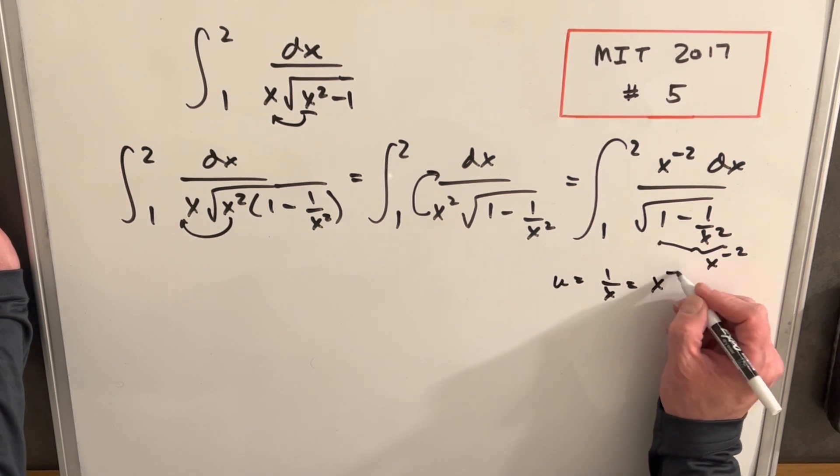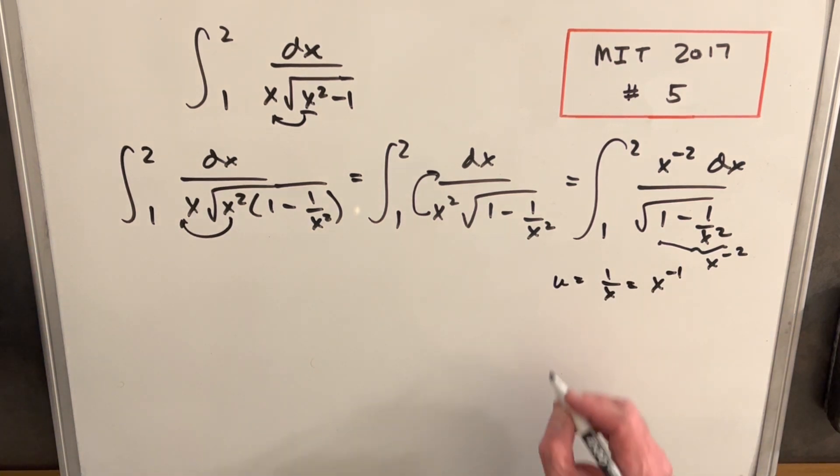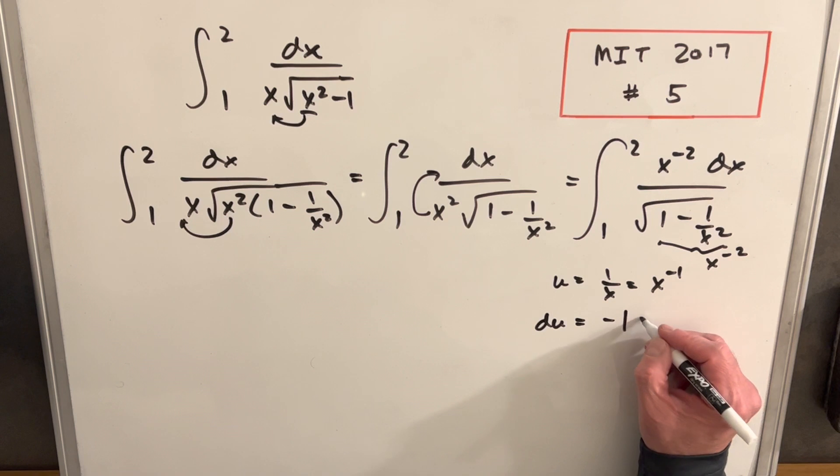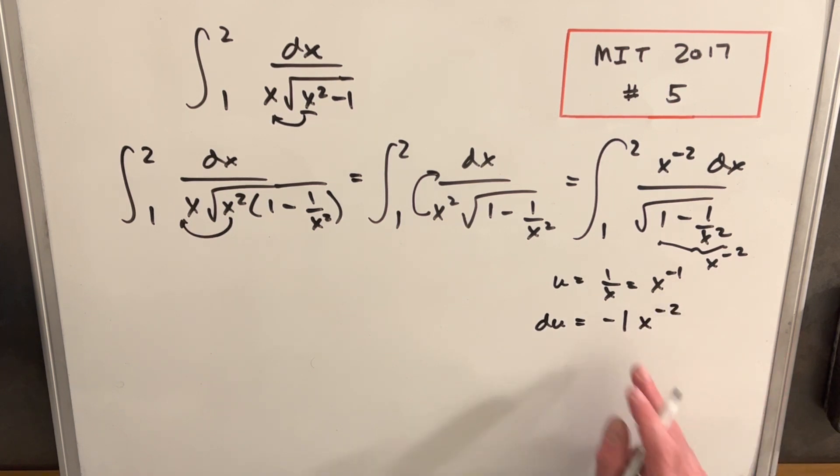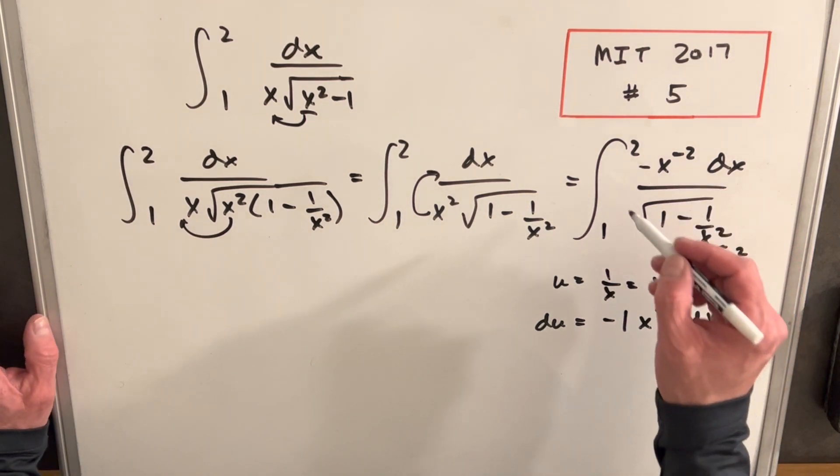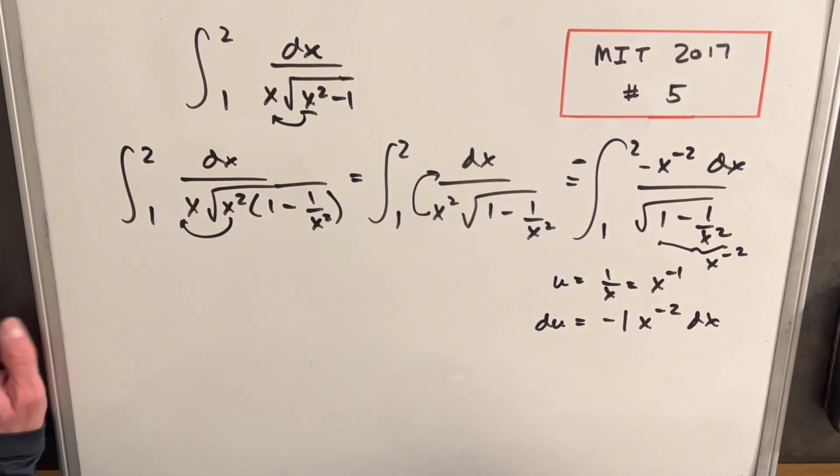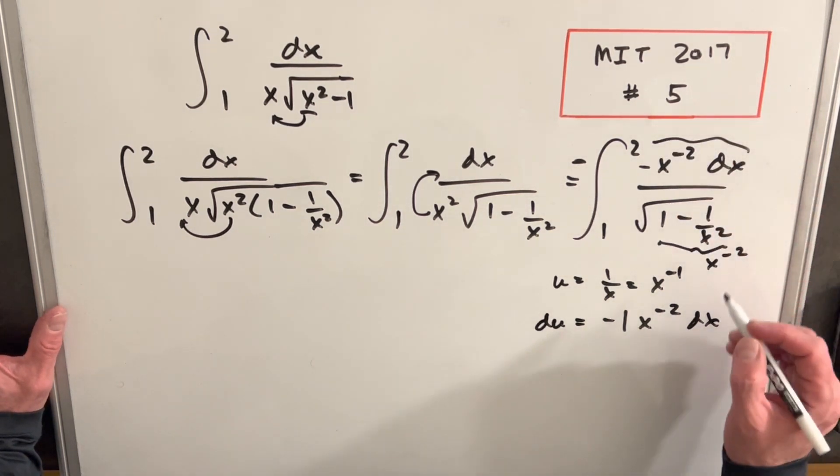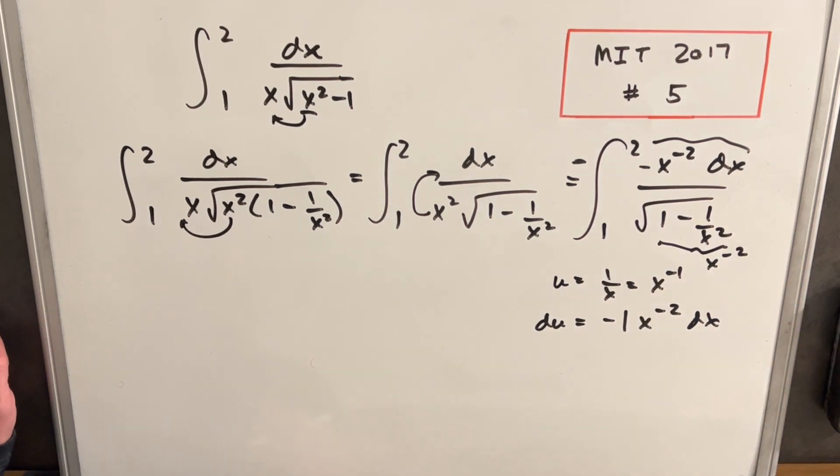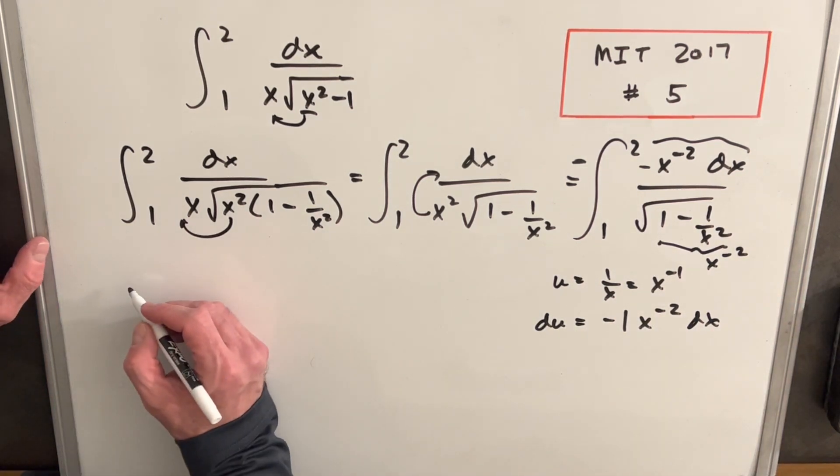And that's going to be the same thing as x to the minus one. So let's see what happens when we take the derivative and get our du. We're going to have minus one x to the minus two. I guess I didn't really need to write a one there. But that's basically what we have in the numerator. We just need to create a minus to have it be identical. We'll just bring a minus out front. So now this piece is our du. And we have, we're going to have a one minus u squared there. But let's rewrite this and make our substitution.